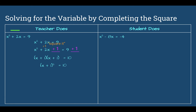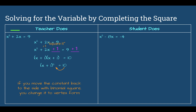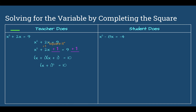Quick note: if you want to change the function into vertex form, you started in standard form. To get vertex form, move the constant back to the other side: x plus 1 to the second power minus 10, then set that equal to y. You'd have y equals x plus 1 to the second power minus 10 — that's vertex form. That's not part of completing the square, but it's how you'd do it if needed.